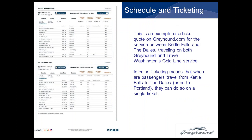Here's an example of an interline ticket quote on Greyhound for service between Kettle Falls and The Dalles, traveling on both Greyhound and Travel Washington's Gold Line service. It shows the carrier from Kettle Falls to Spokane as being Gold Line Washington, and after that it's Greyhound from Spokane to The Dalles. The importance of interline ticketing is that the passenger will see the service as a single trip. Although not necessarily required by FTA, Greyhound sees this as critical to its definition of a meaningful connection and the use of in-kind match.